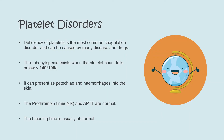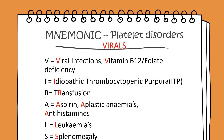The second category is platelets. Issues with the way platelets are working can also affect the way blood coagulates. Deficiency of platelets is one of the most common causes of coagulation disorder and can be caused by many diseases and drugs. Thrombocytopenia exists when the platelet count falls below 140 × 10⁹/L. It can present as petechiae and haemorrhages into the skin. Both the prothrombin time and the aPTT are normal, but the bleeding time is usually abnormal and increased.